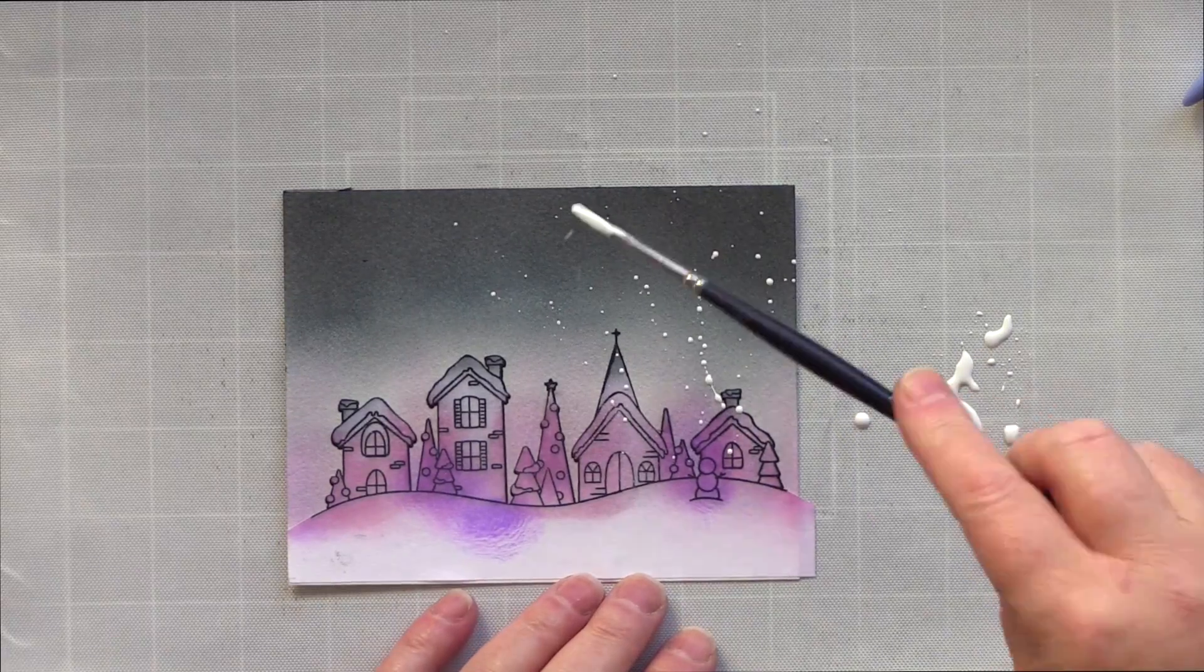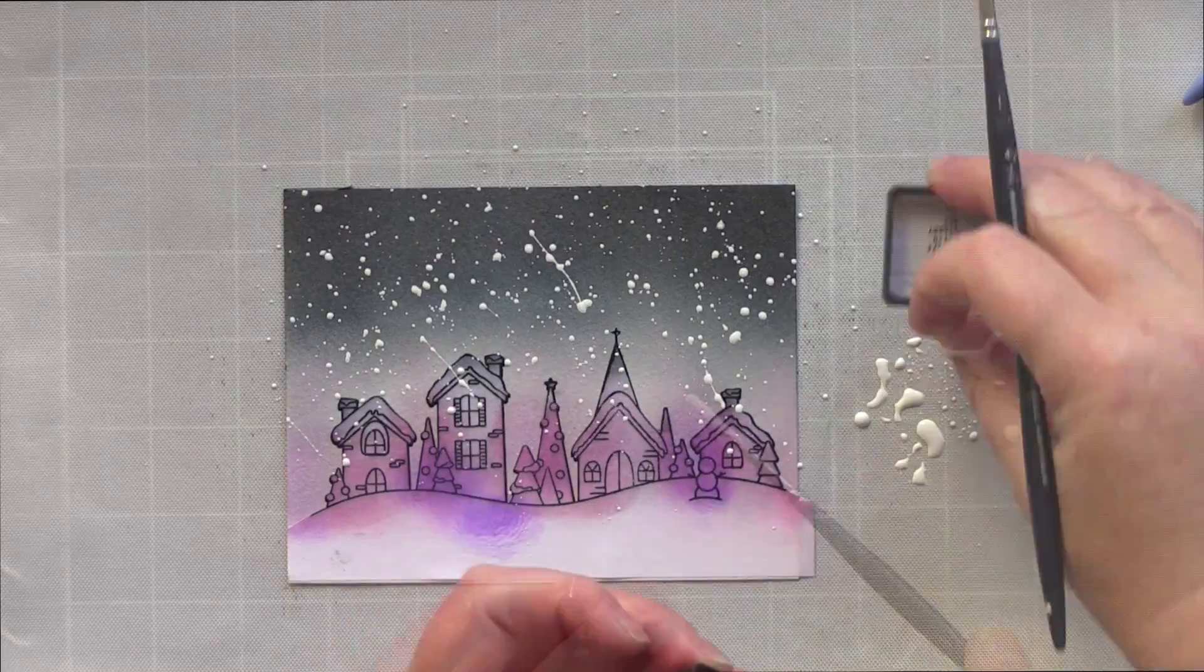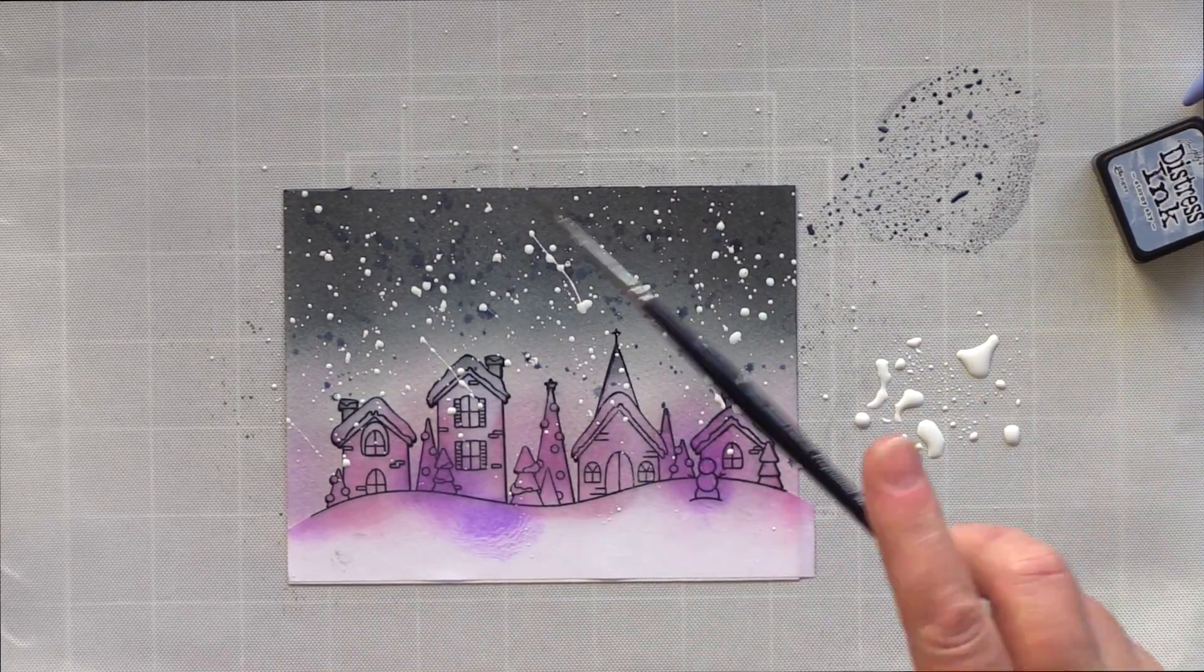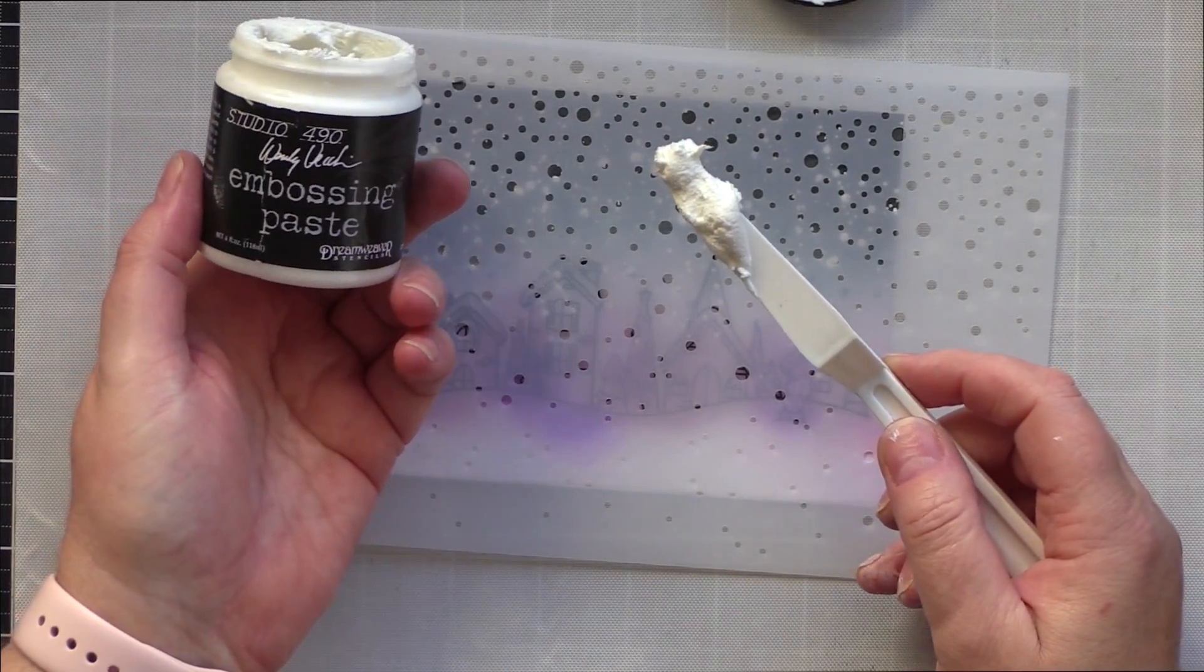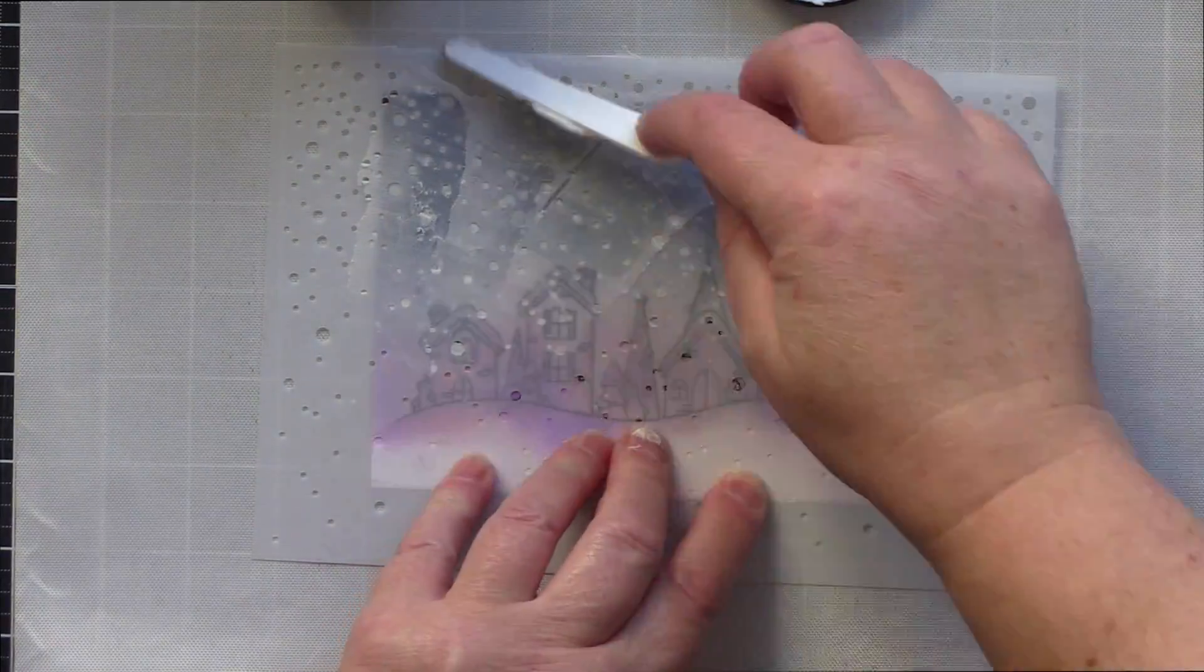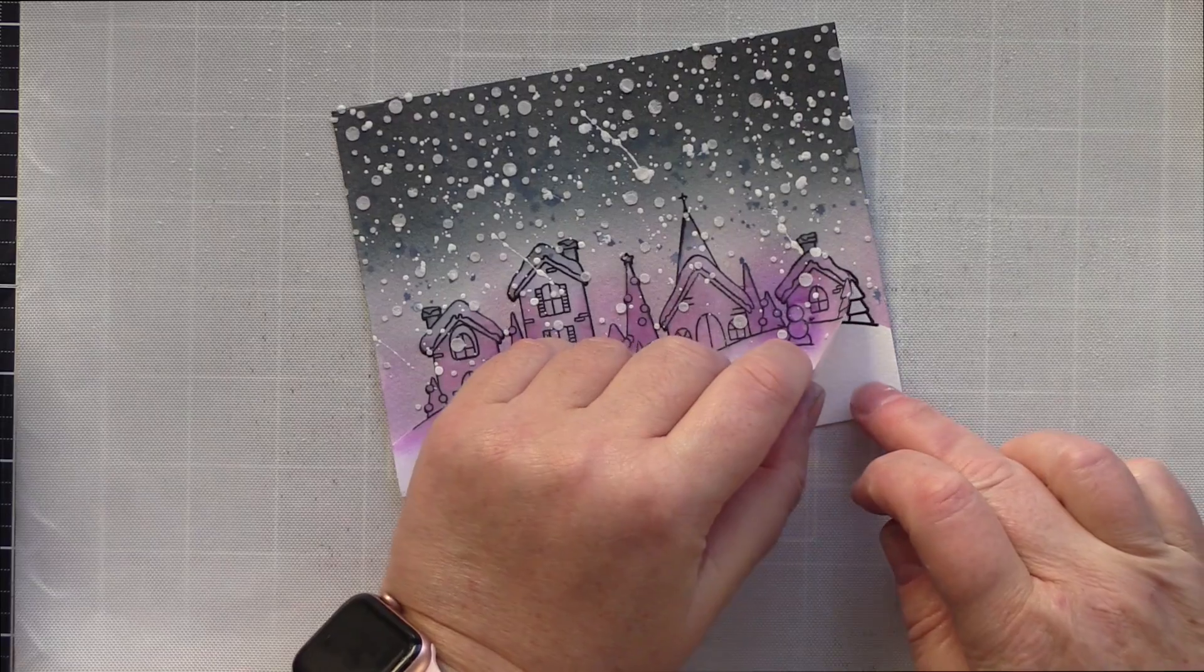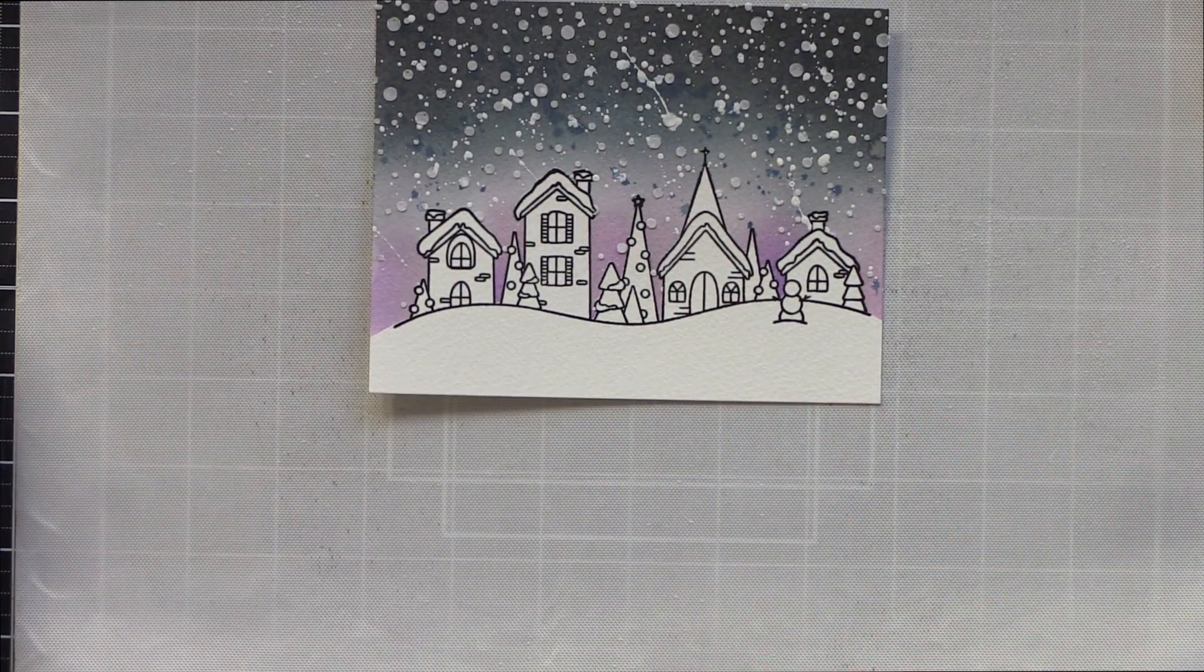While I still had the mask covering the houses, I splattered with white gouache, then pressed the Stormy Sky pad to the mat and picked up some of the ink with a brush and splattered that too. Next, I really wanted the sky to be the star of the show so I used the Large Falling Snow stencil and added snowflakes with white embossing paste from Wendy Vecci. Finally, I lifted the mask to reveal the clean clear crisp winter scene under an atmospheric winter sky.